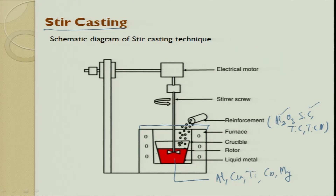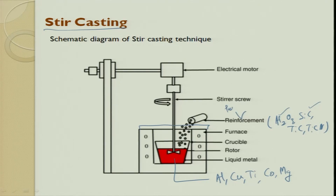This process is called stir casting. After stir casting, if you want you allow it to solidify, or you take this mixed material and pour it inside a mold or a die to get the required output. It can also be poured for metal injection molding to get the required product. The starting material will predominantly be particulate or whisker, but whisker is always a challenge, so we always choose particulate and disperse it.